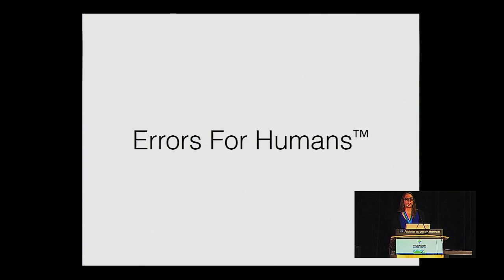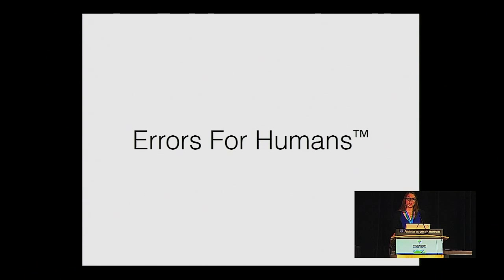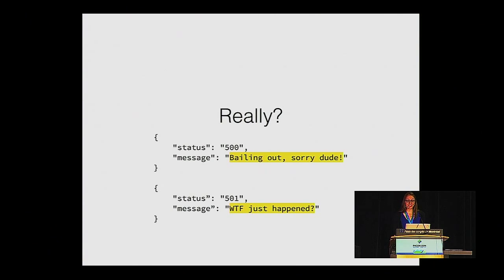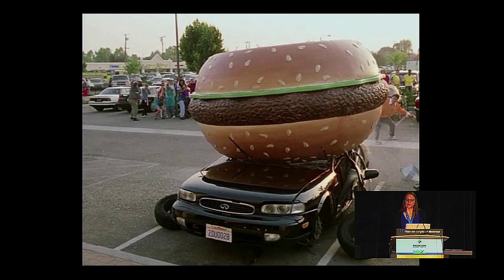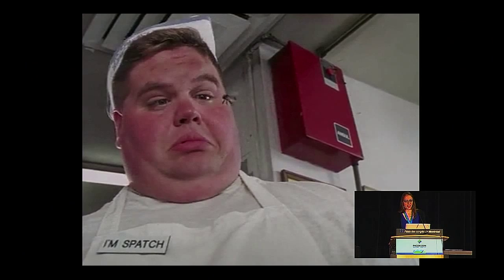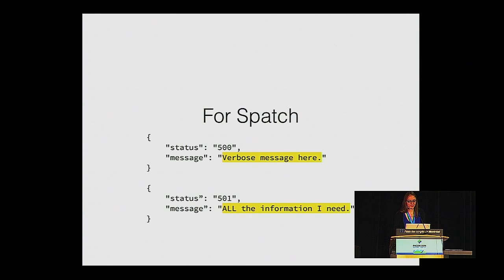Next, show errors for humans. If something goes wrong when your API makes a request, status codes and messages will be your friend. Some go in the header and some go in the response body, showing errors for humans. First, these are real error messages that are useless and give the developer no information — 'bailing out, sorry dude' — that's something you might expect to hear when you see this. But you want error messages that are verbose and provide much more information. Better errors explain the problem that is actually happening.